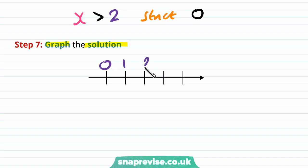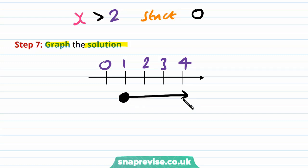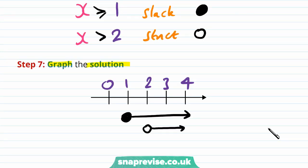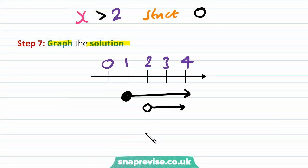Step 7: graph the solution. On a number line with 0, 1, 2, 3, and 4, we have a filled-in circle at 1 going to the right (x ≥ 1), and a plain circle at 2 going to the right (x > 2). The two inequalities overlap, but since the second is stronger than the first, the solution is only x > 2. Any values between 1 and 2 cannot work because x > 2 is not satisfied there. Both inequalities must hold simultaneously, so the first adds no new values and the final solution is x > 2.